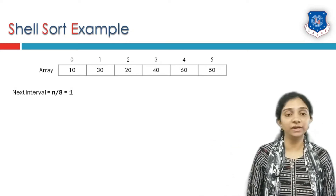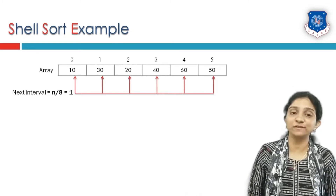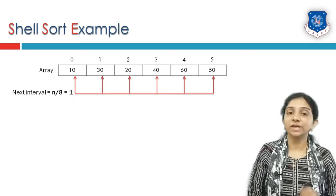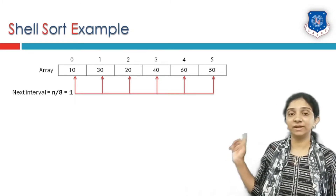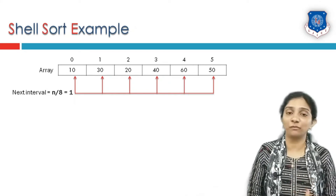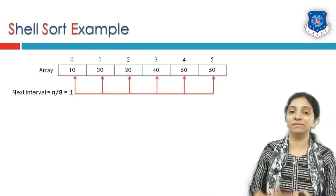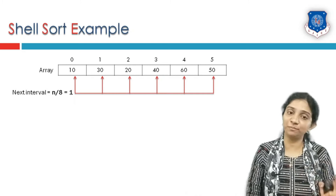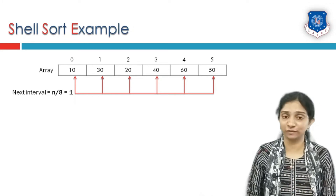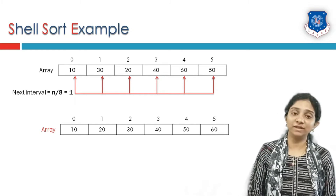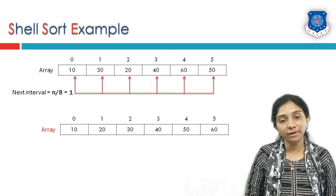Now we again decrement our interval. The next interval is n/8, which is 6/8, approximated to 1. In this case, every element that is one element apart will be considered part of one sub-list. Since every consecutive element is one step apart, all elements form a single sub-list. We apply insertion sort to this entire list, and after sorting the elements are 10, 20, 30, 40, 50, and 60 — the fully sorted array.